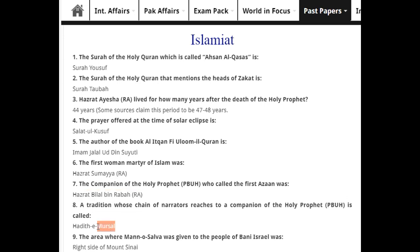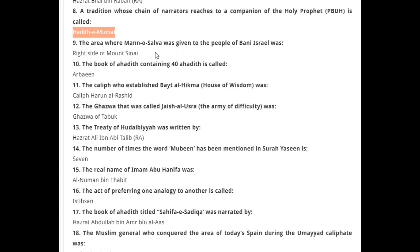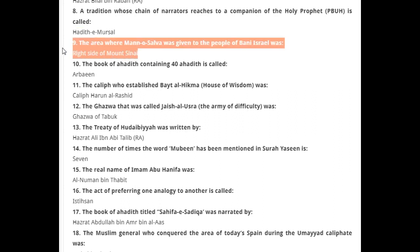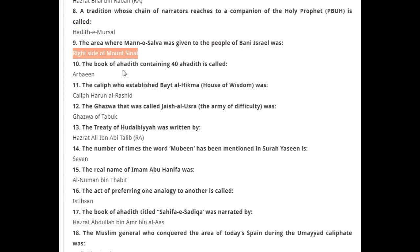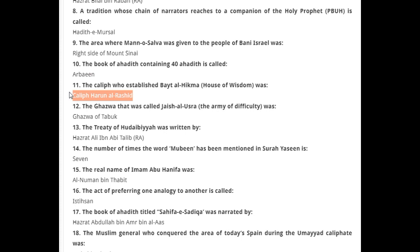A tradition whose chain of narrators reaches to the companion of the Holy Prophet is called Hadith Mursal. The area where Mann-o-Salwa was given to the people of Bani Israel was the right side of Mount Sinai. The book of Ahadith containing 40 Ahadith is called Arba'in. The caliph who established Bayt al-Hikmah (House of Wisdom) was Caliph Harun al-Rashid.